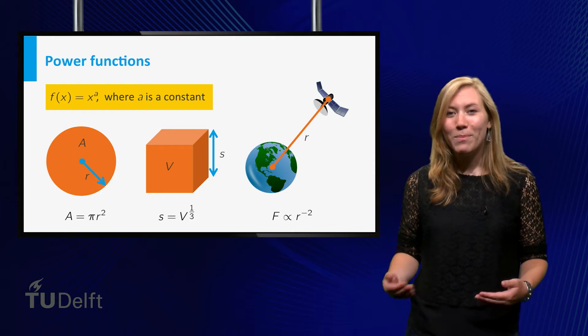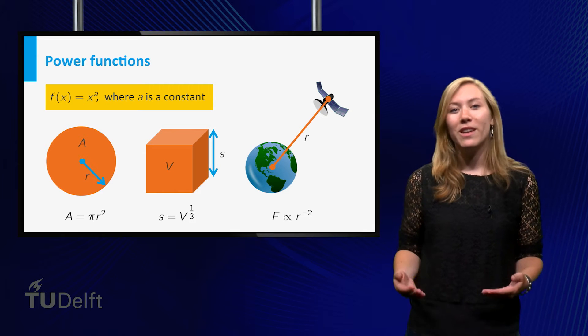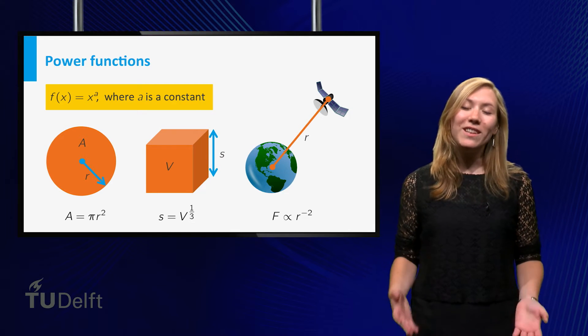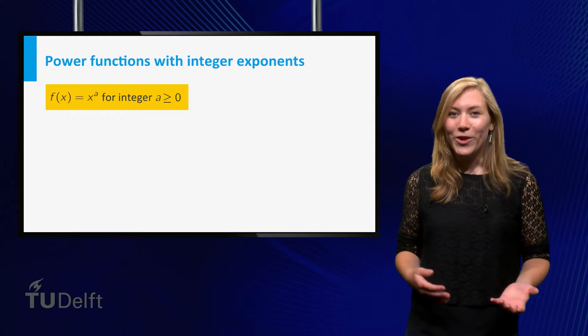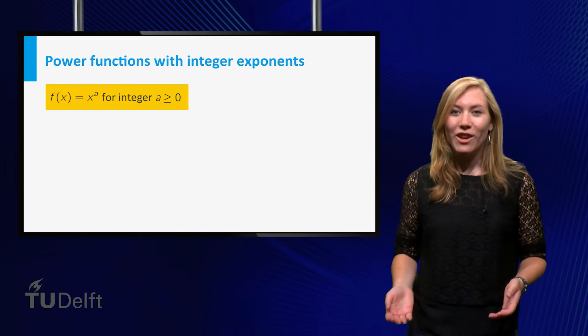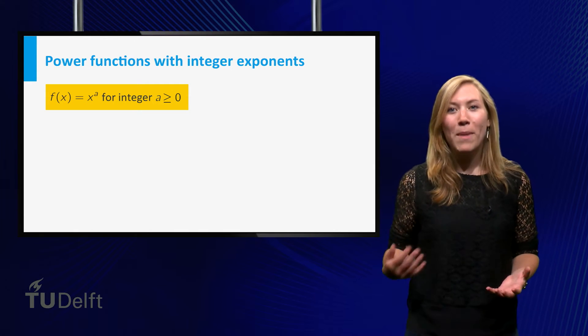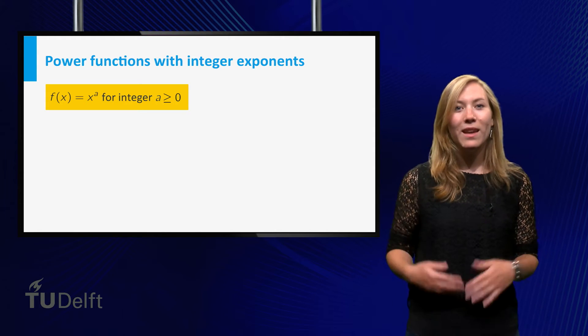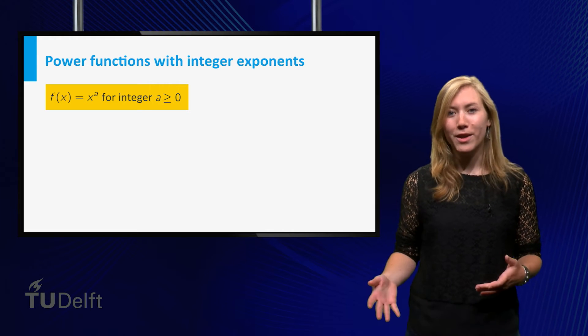The properties strongly depend on whether the exponent is positive or negative, and whether it is integer or not. In this video we focus on integer exponents. Let's first restrict to the case that a is an integer larger than or equal to 0. In this case, a power function is a special case of a polynomial of degree a. It is also called a monomial and can be seen as a repeated product.